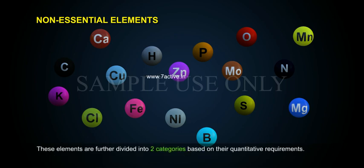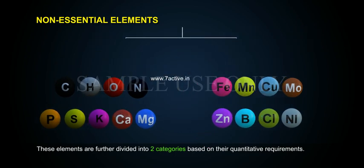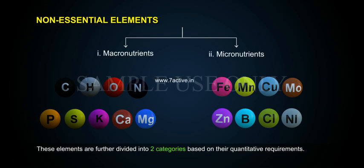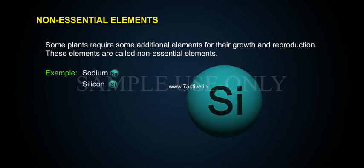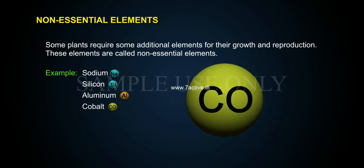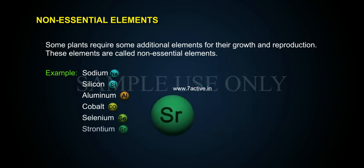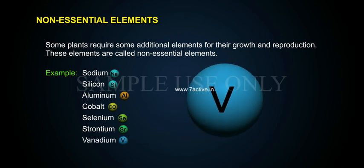These essential elements are further divided into two categories based on their quantitative requirements: 1. Macronutrients, and 2. Micronutrients. Some plants require additional elements for their growth and reproduction; these are called non-essential elements. Examples include Sodium, Silicon, Aluminium, Cobalt, Selenium, Strontium, and Vanadium.